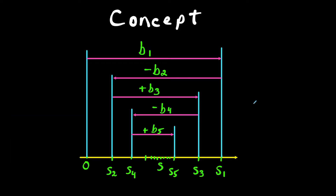The concept behind why the alternating series test works is that when we're adding and subtracting positive things and the things we're adding and subtracting are getting smaller and smaller — so b sub n is decreasing — and the limit as n goes to infinity of b sub n is equal to zero. That means we're going to be going forward and backwards by smaller and smaller amounts, zigzagging until we get to s, which is the actual sum of our alternating series.